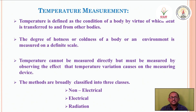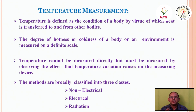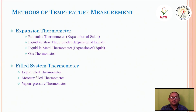Temperature measurement has three types: non-electrical, electrical, and radiation. Non-electrical and electrical types are contact types — the sensor physically contacts the temperature source. The radiation type is a non-contact type — the sensor does not directly contact the source but measures temperature by detecting emitted radiation, like modern contactless forehead thermometers.